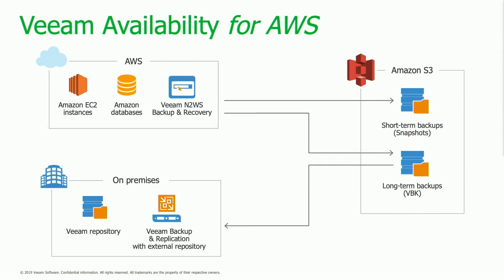At a high level, we deploy a backup and recovery appliance in AWS that calls all the APIs to take snapshots of everything you want to back up — instances or database services. Once those snapshots are in place, we can copy and offload them to S3, creating what we call an OVBK. This is similar to Veeam's VBK format — Veeam Backup and Replication can read the OVBK on-premises or wherever it's deployed, and manage it as a backup file.